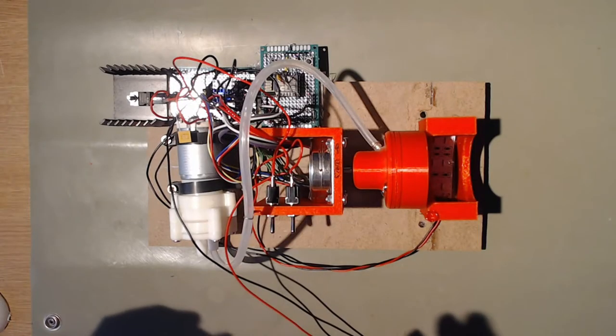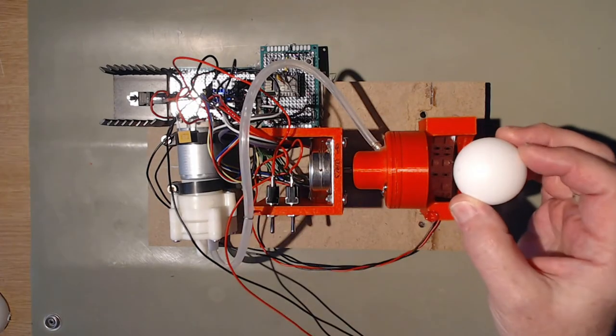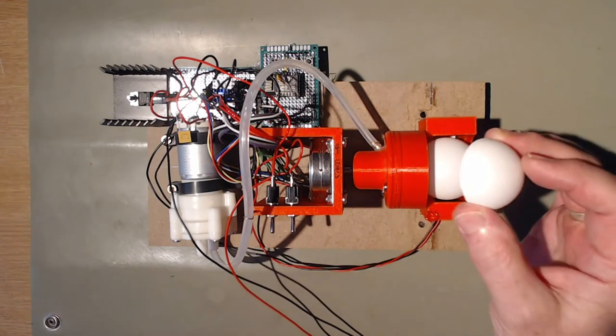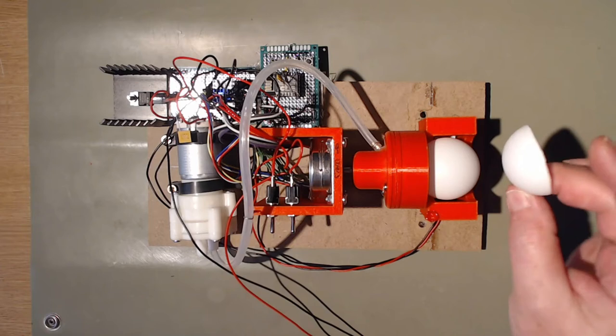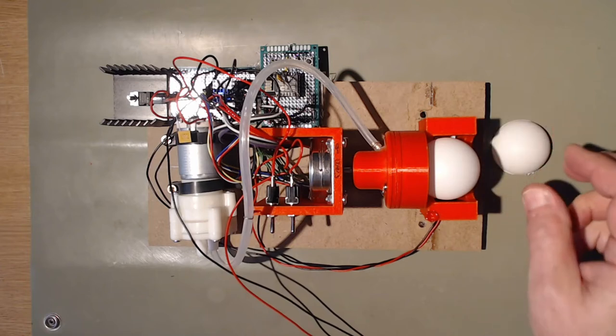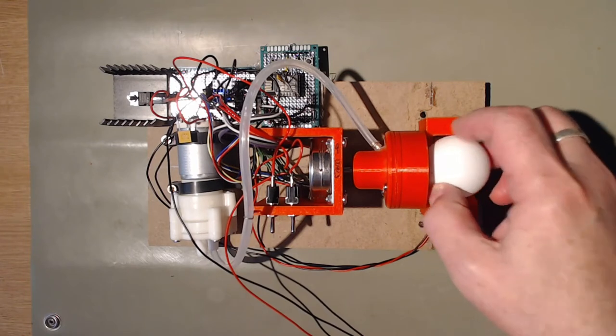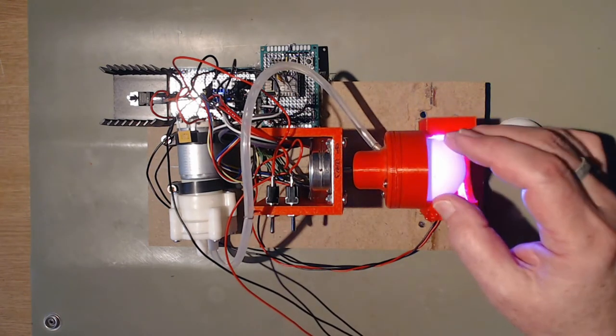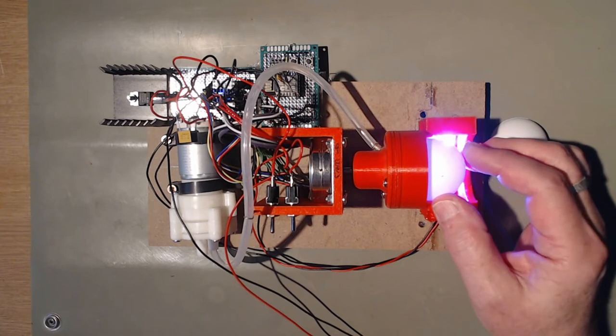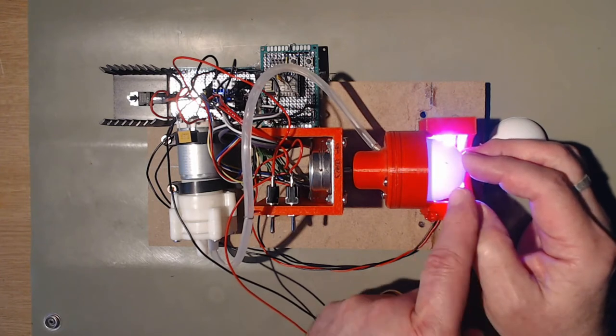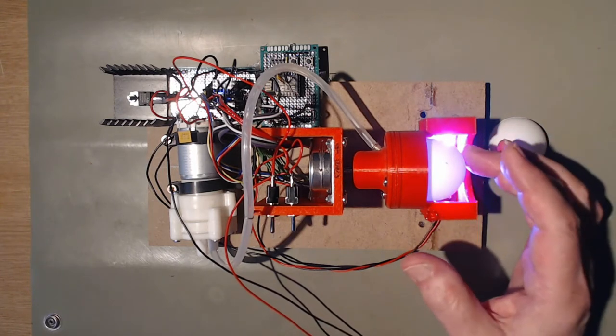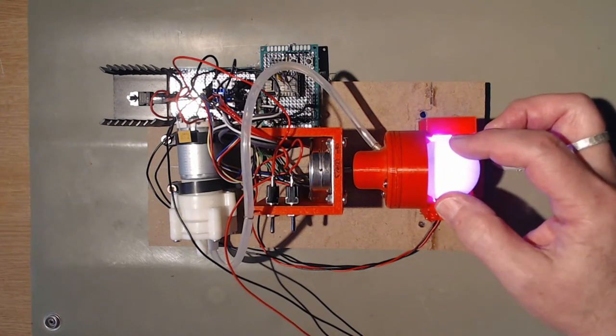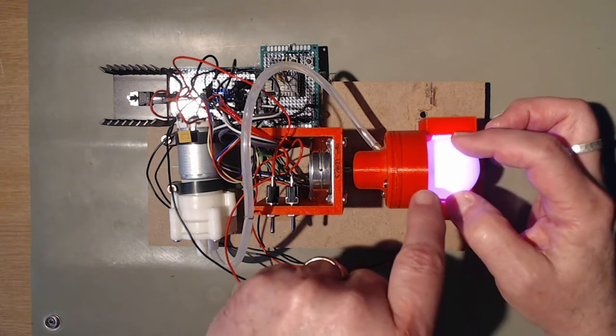This was supposed to turn one of these ping pong balls into two of them. The idea was that you put the ping pong ball in there. There's a seam - you can see the shadow moving, that's the seam in the ping pong ball.